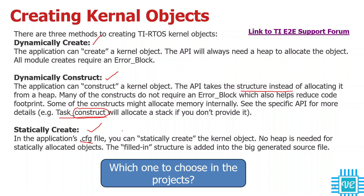There is one object that cannot be created with dynamic construct or dynamic create — that is the idle task. The question is: which method should you choose for your projects? It is up to the application engineer, depending on the use case and memory constraints. In this series of video tutorials, I am going to use dynamic creation, which uses heap memory. All TI RTOS examples provided with the SimpleLink SDK use dynamic construct. Each method has its own advantages and disadvantages.